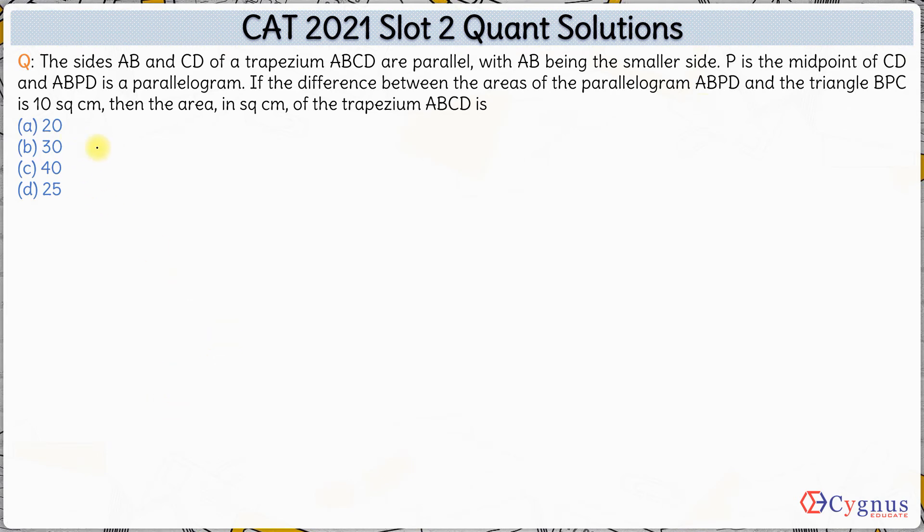Hi, in this question we are given that the sides AB and CD of a trapezium ABCD are parallel, with AB being the smaller side. So there is a trapezium ABCD. This is the trapezium. Side AB is the smaller side and AB and CD are the parallel sides.